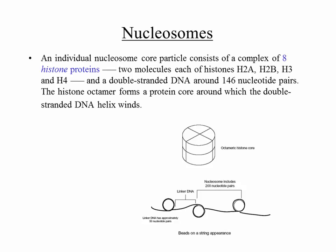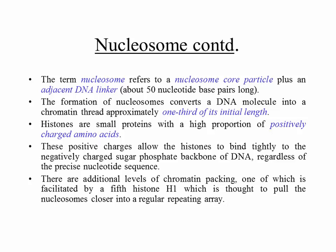This winding of DNA on histones reduces the length of the DNA by a factor of three, and there are additional levels of packaging. Histones are small proteins with a high proportion of positively charged amino acids, ensuring they bind tightly to the negatively charged sugar-phosphate backbone of DNA regardless of the precise nucleotide sequence. There are additional levels of chromatin packing, one of which is facilitated by a fifth histone, H1, thought to pull nucleosomes closer into a regular repeating array.